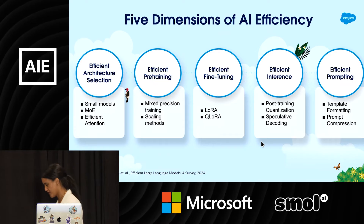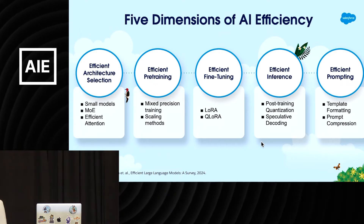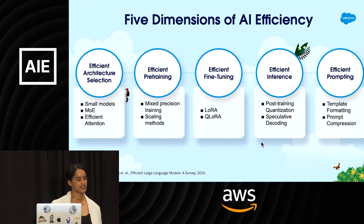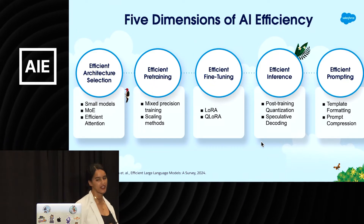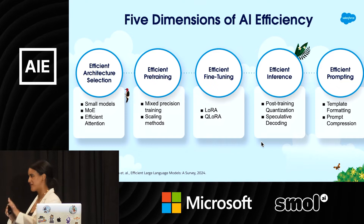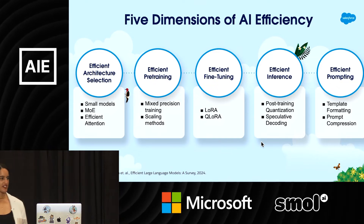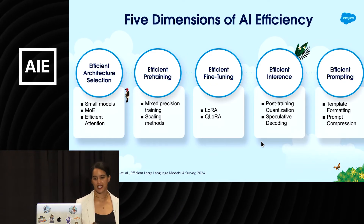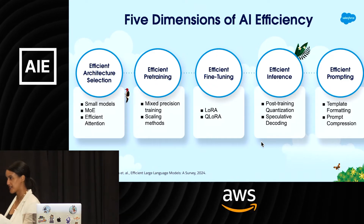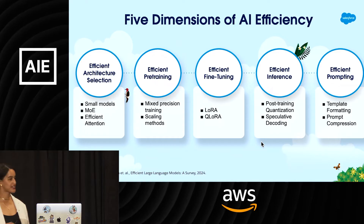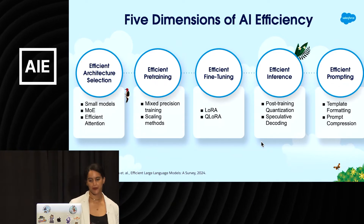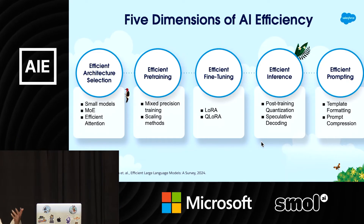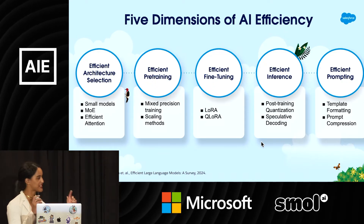How do we make AI more efficient? I've summarized it into five dimensions — five orthogonal directions to consider as you're building and deploying AI for customers. This is just scratching the surface, but I'm hoping these five dimensions will be easy to remember. The first is picking efficient architectures from the very beginning — this includes picking small models, using sophisticated architectures such as mixture of experts, and choosing efficient attention mechanisms.